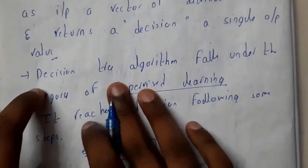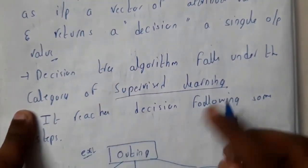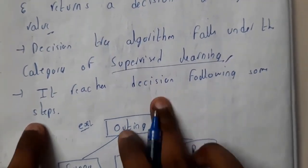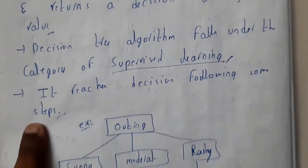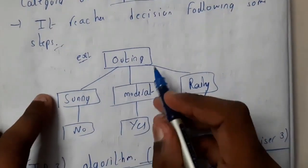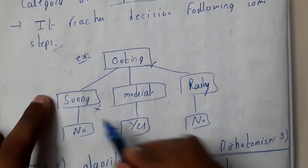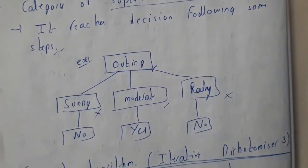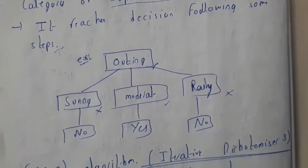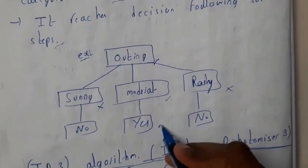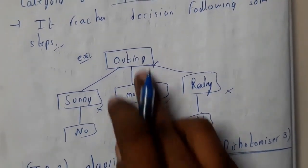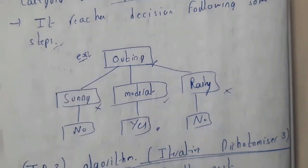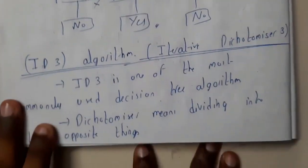The decision tree algorithm falls under the category of supervised learning. It reaches a decision step by step. For example, assume you need to go on an outing — if it is sunny you are not interested, if it is rainy also you are not interested, but if the temperature is moderate — not too cool or too hot — then you are interested in going out. These kinds of decisions are modeled using decision trees.